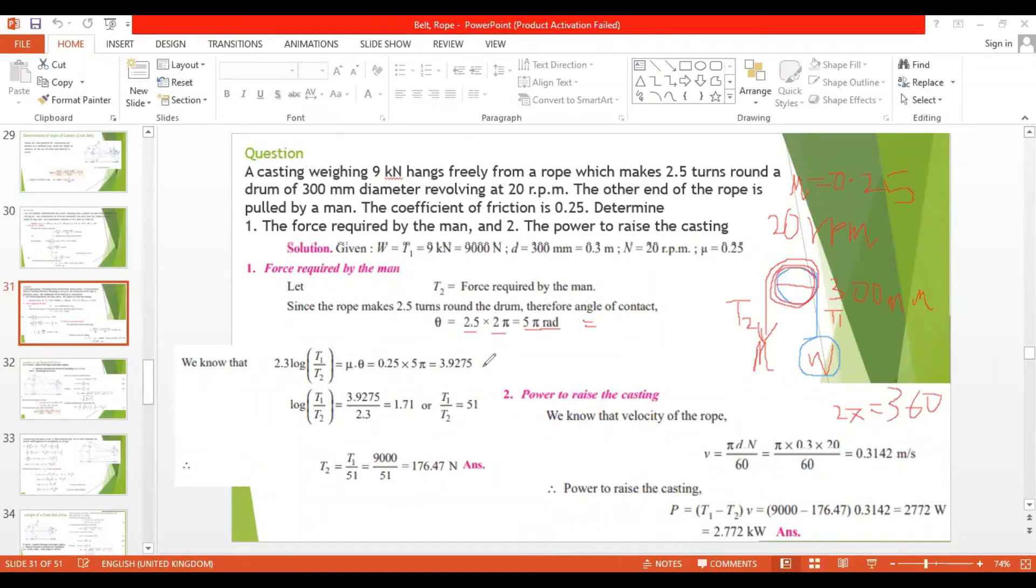When you divide it by 2.3, you will have log T1 by T2 equal to 3.9275 upon 2.3, that will give you 1.71. When you take antilog, you will have T1 by T2 equals 51. The ratio now you have found.